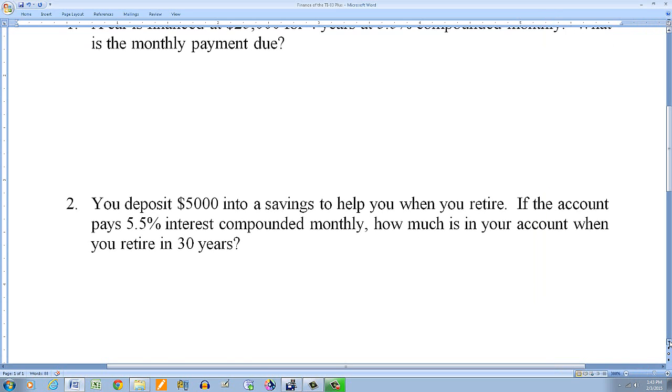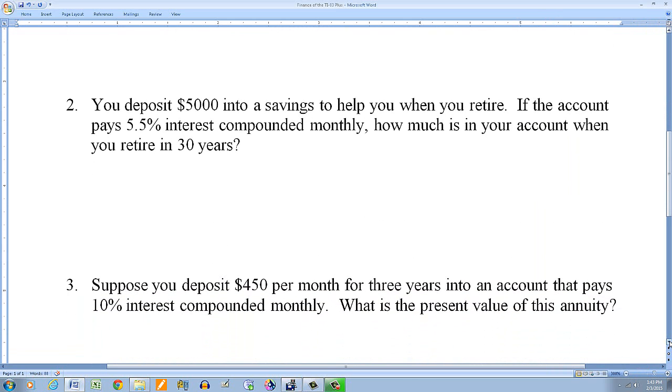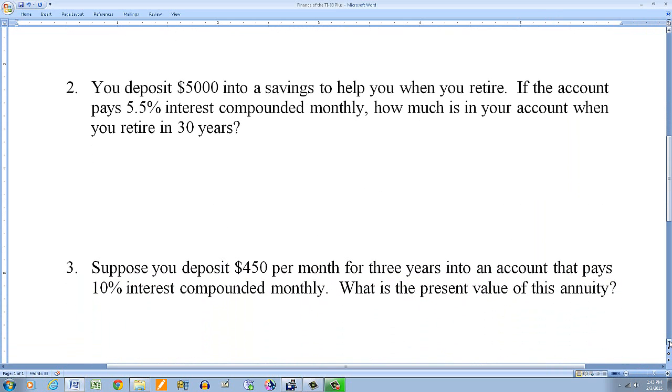Let's go to the next one. Now you deposit $450 per month for three years into an account that pays 10% interest compounded monthly. What is the present value of this annuity? What is the present value? So we're not looking for a future value, we're looking for the present value.